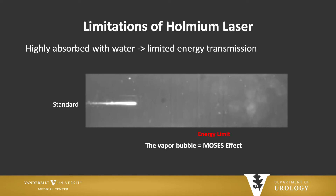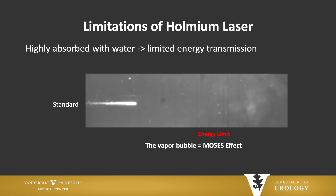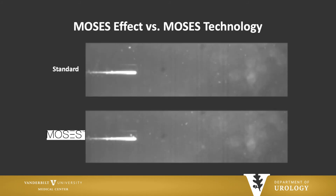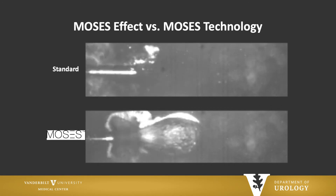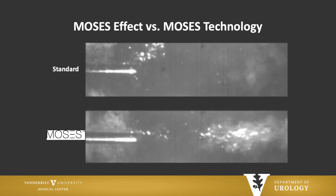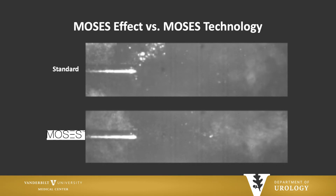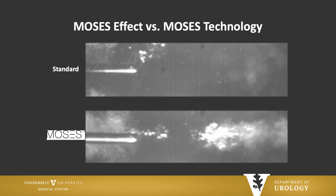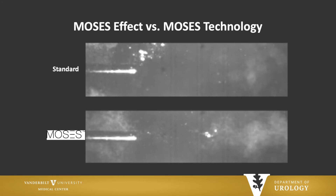There are limitations to the Holmium laser. It's highly absorbed by water, but that limits energy transmission to the stone. The Moses effect was described in 1986 in endovascular tissue ablation — it refers to the creation of a vapor bubble at the tip of the laser fiber when firing, and then the laser pulse travels through that bubble. Moses effect is different from Moses technology. Moses technology actually modulates the laser pulse to exploit that effect: a small initiation pulse pushes fluid aside, allowing the second pulse to travel through it and deliver more energy to the stone.